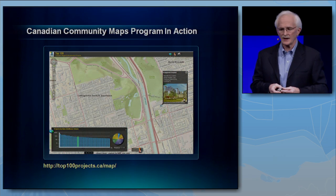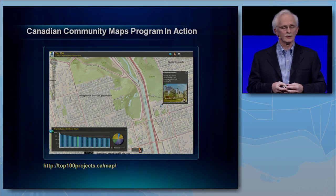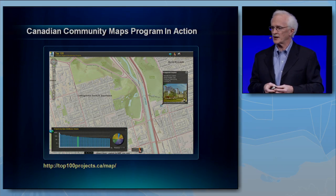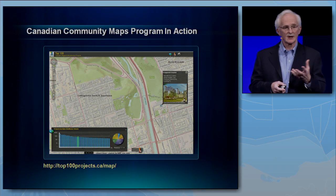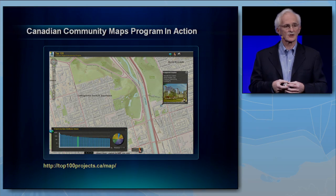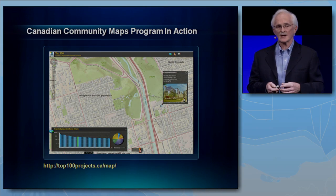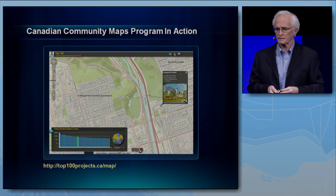Here's an example of a company called Renew Canada that was using Google to publish the top 100 infrastructure projects across Canada. They switched to the community base map and Esri API because of the rich data in the community map across the country and the rich development environment of the Flex application.